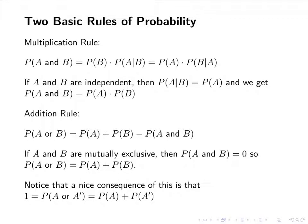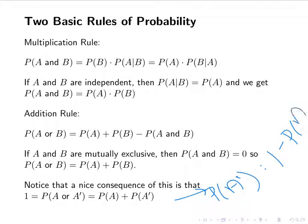A nice consequence is that the probability of A or A prime — the complement of A, everything that is not A — equals one, because everything is either in A or not A. Since A and A prime are mutually exclusive, this equals the probability of A plus the probability of A prime. So generally we use: the probability of A prime equals one minus the probability of A. We'll see this come up a lot in later sections.